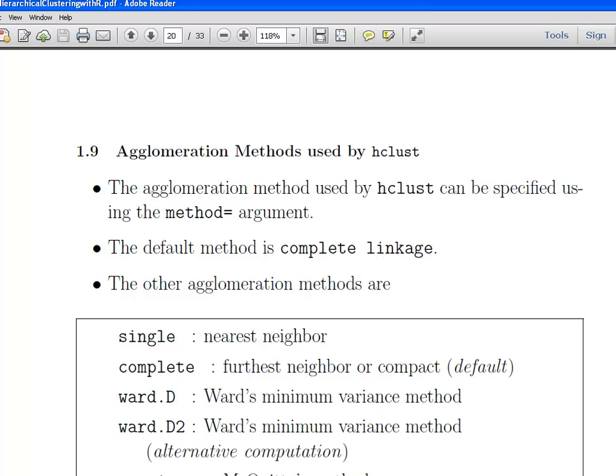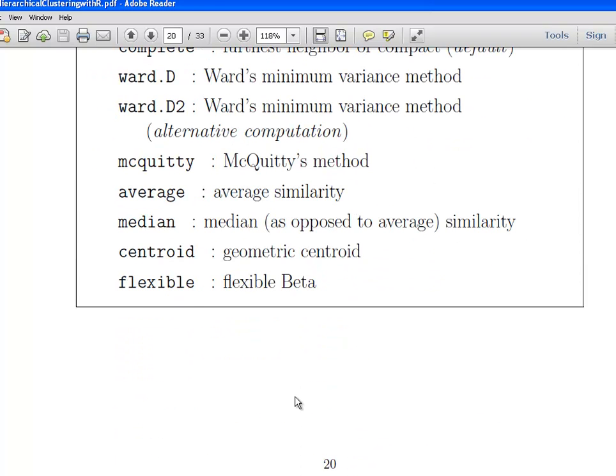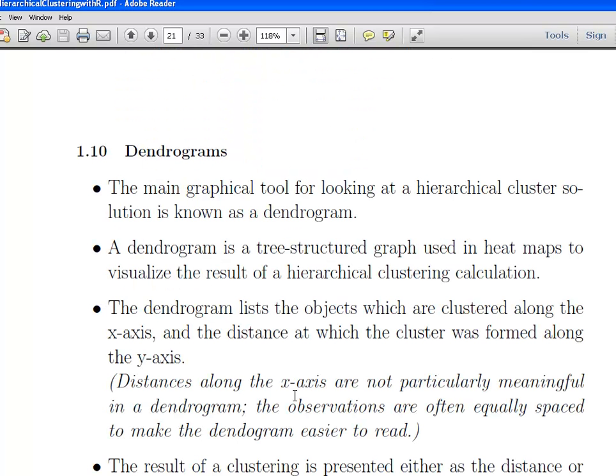Each one of those needs a full discussion in its own right. The default method of R for HClust is complete linkage. You could use Ward linkage as well. These are all the agglomeration schedules or linkage methods used by HClust: single (nearest neighbor), complete (furthest neighbor or compact, the default), Ward's minimum variance method (there's two of them), the McQueeting method, average similarity, median, centroid, flexible. Until you get good at this, stick with complete or Ward's distance or nearest neighbor.